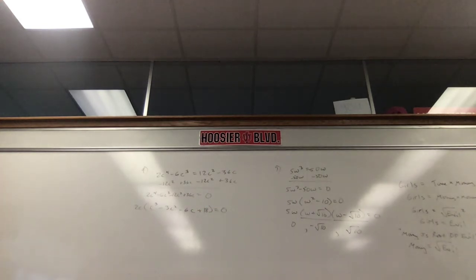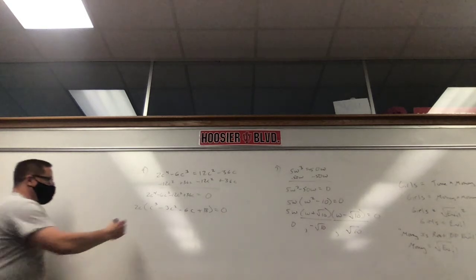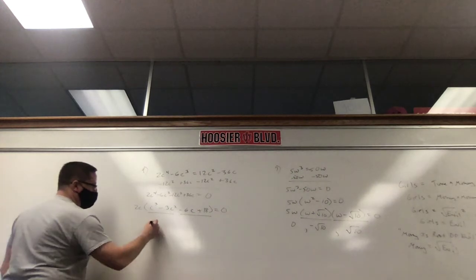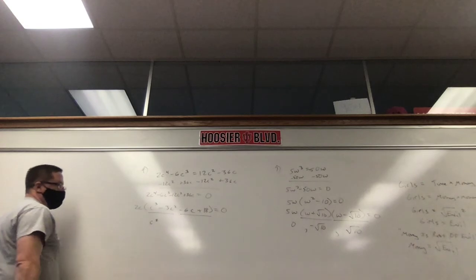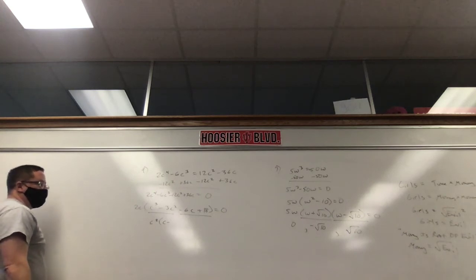Ignore the 2c outside. Now, we have four terms inside. What do we do with four terms? Group them — first two, last two. Factor c² out of the first group: c²(c − 3). For the last group, 6 and 18 share factors — factor out negative 6: −6(c − 3).